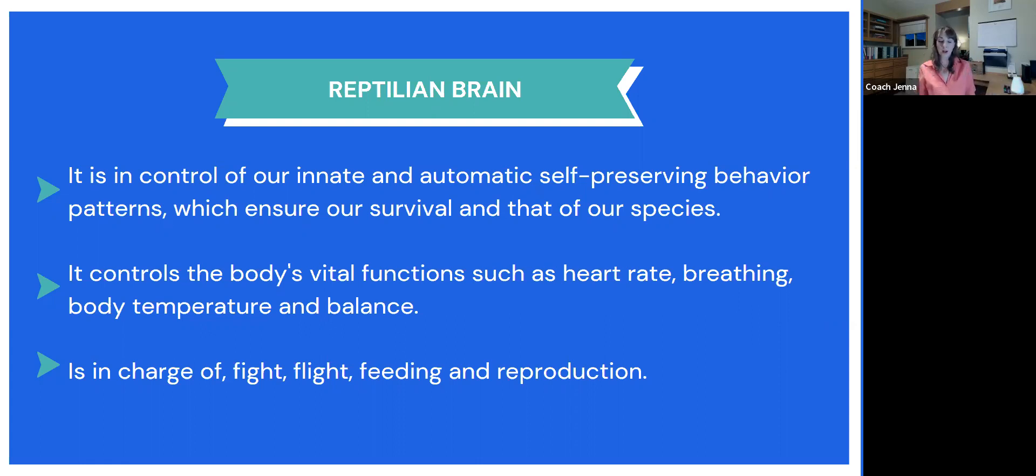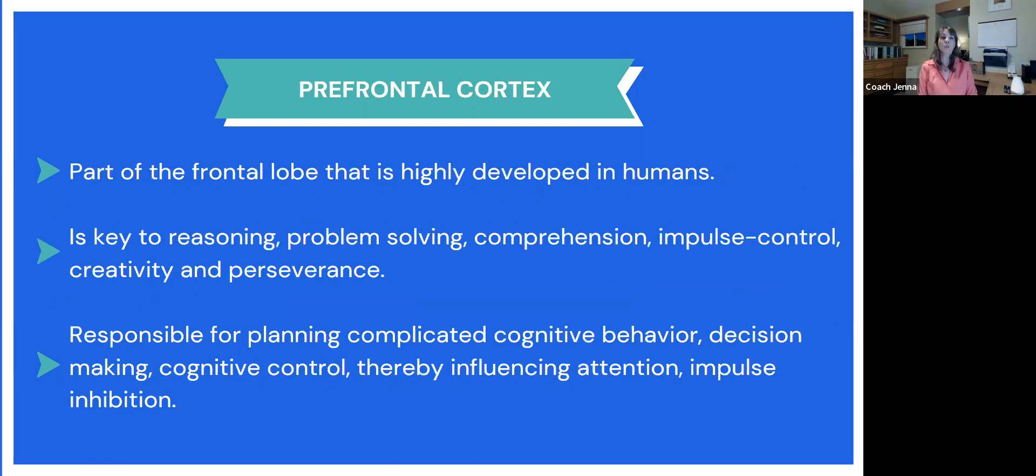And it's in charge of our flight, fight, feeding, and reproduction. Back in our caveman days, this was all we really needed. And survival was our main goal. But since then, we've evolved. And now we spend much of our time using our prefrontal cortex. Our prefrontal cortex is part of the frontal lobe. And it is highly developed in humans, not in all animals and species, just humans. And it is key to our reasoning and problem solving, our comprehension, our impulse control, our creativity, and our perseverance. It's also responsible for planning complicated cognitive behaviors, say that three times fast, decision-making, cognitive control, and thereby influencing our impulse and inhibition.